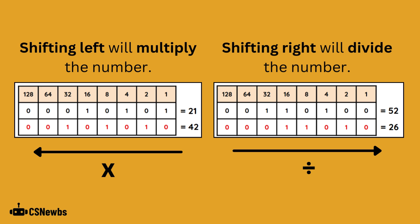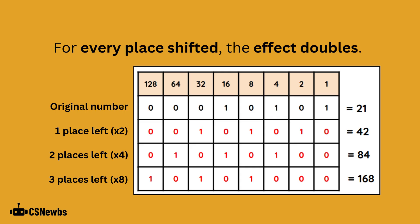Shifting a binary number to the left will multiply it. Shifting a binary number to the right will divide it. For every place that is shifted, the effect doubles.